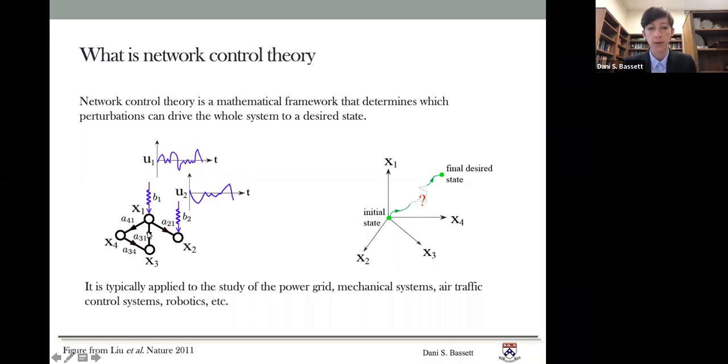Here's an example of a little network of four different nodes where inputs U are placed inside particular nodes to drive the activity of the rest of the system. And here's an example of what that might look like in a state space where the initial state may be at the origin and the final state driven by U may be somewhere else.